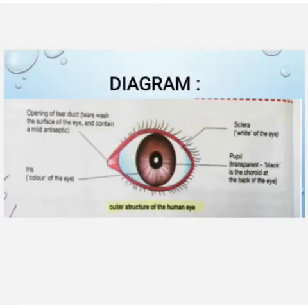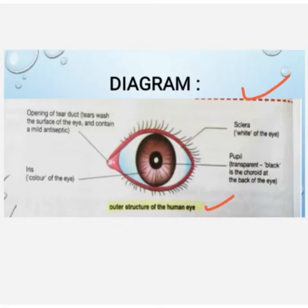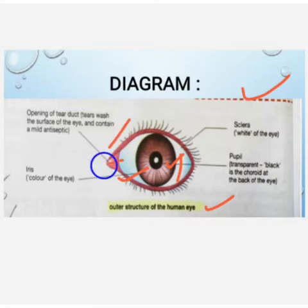This diagram shows the outer structure of the human eye. It shows the white portion of the eye, then the pupil, then the iris, and then the opening of the tear duct.